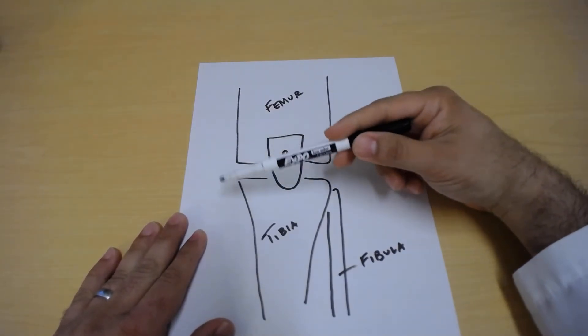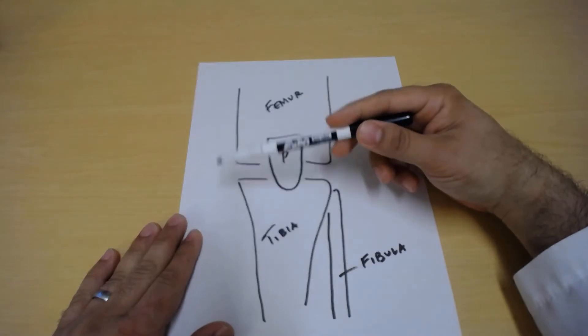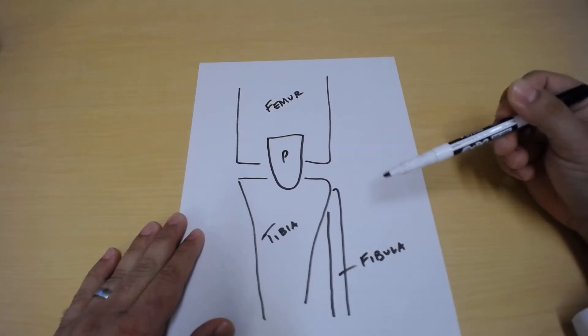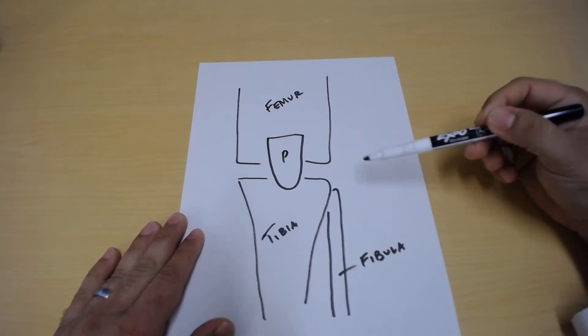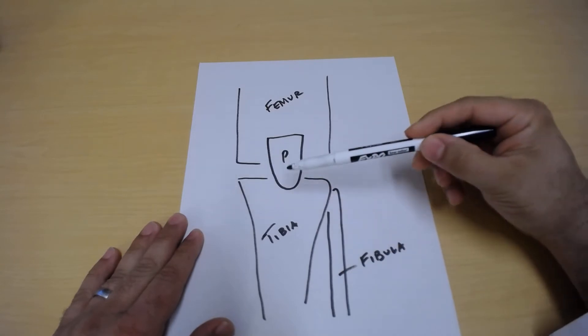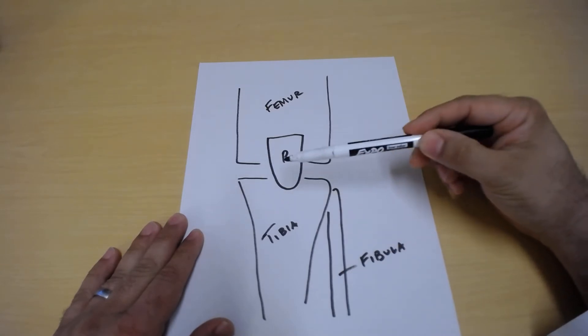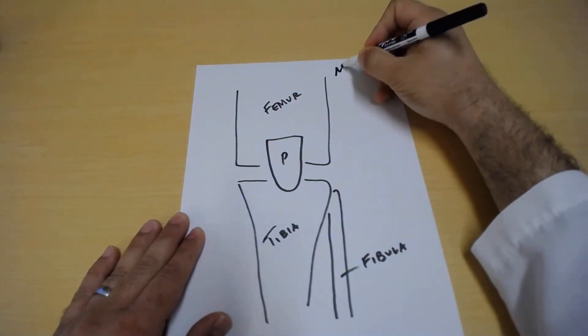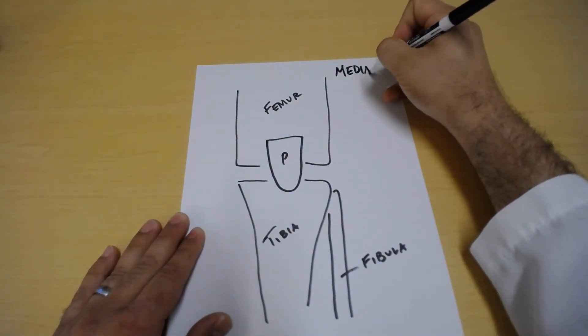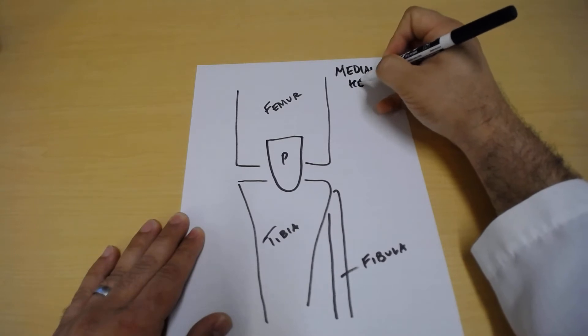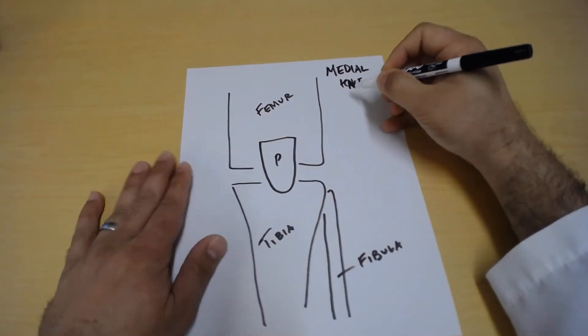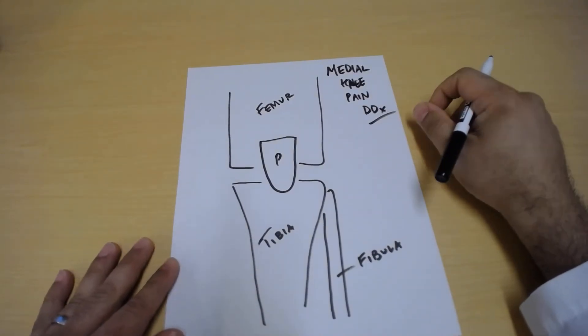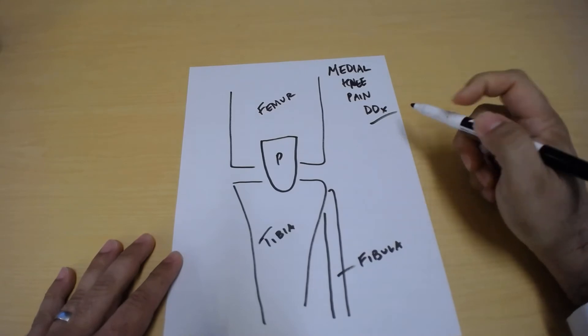So just for orientation this would be the inner side of the knee kind of where your two knees touch. This would refer to the lateral or outer side of the knee. So when I use the term lateral it's referring to out here, medial over here. Anterior would be around the kneecap or in the front. So this talk is just going to solely be talking about medial knee pain and the differential diagnosis involved in that.